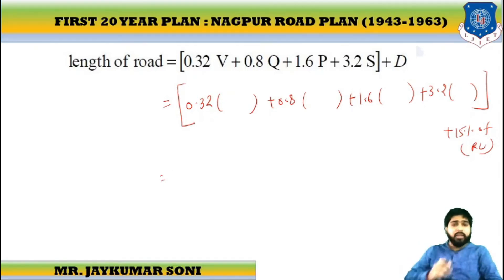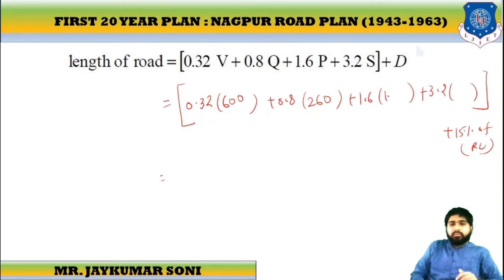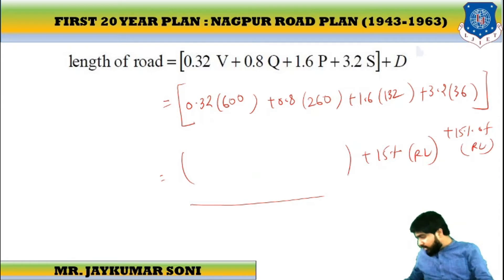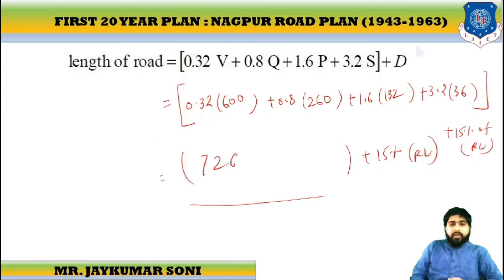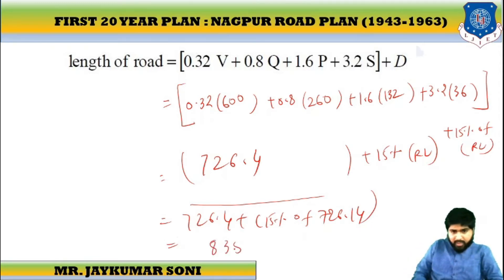Putting the values: B = 600, Q = 260, then 150, 120, and 180. D will be 15% of this value. The total comes to 1,726.4, and after adding 15%, the final value is approximately 835.32 km.